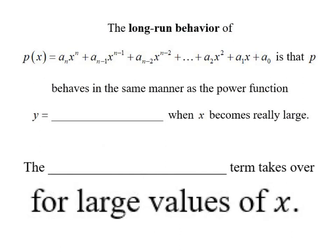So in general, what we have here is if we just have a general polynomial, we'll use p(x). A lot of times we'll use p for a polynomial. So p(x), and this is just the general form written in standard form. So generally, p(x), the long-run behavior of p(x) is that p behaves in the same manner as the power function y = a_n x^n when x becomes really large. And we can just say that the leading term takes over for large values of x.